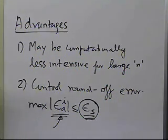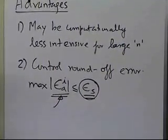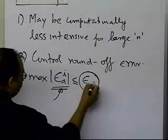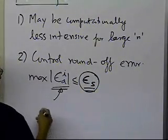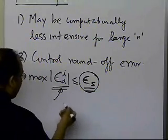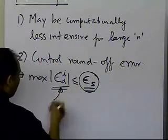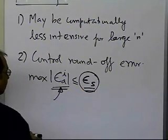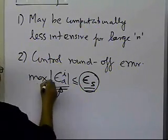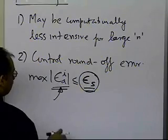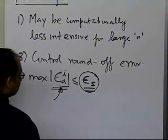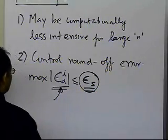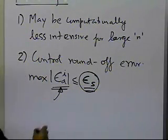Of course there's a limit, because depending on the machine epsilon of the computer, you cannot choose the tolerance arbitrarily small — if you choose epsilon to be 10 to the power of minus 20 for single precision, it's not going to do any good, because numbers are represented only up to maybe 6 or 7 significant digits. So you can control round-off error a little bit better than Gaussian elimination, where there is no way to control it. Those are the advantages of using the Gauss-Seidel method, and that is the end of this segment.